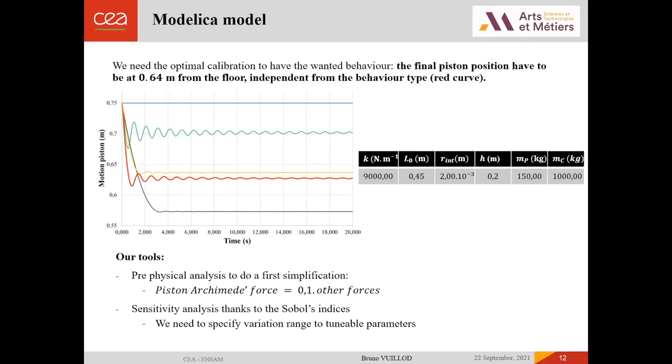And I also give the parameters that will allow us to plot these red curves. K is the spring constant coefficient. L0 is the unstretched spring length. R1 corresponds to the internal radius of our piston where the oil is moving in. H corresponds to the height of our piston. Mp is the passenger mass, and Mc is the car mass.